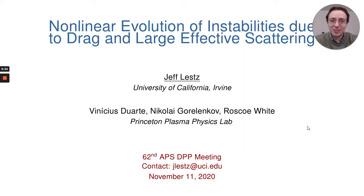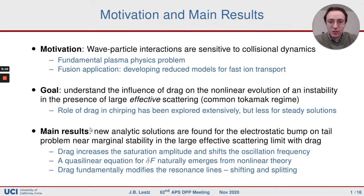Hi, I'm Jeff Letts. I'm a postdoc at UC Irvine, and this is some work that I did with collaborators at Princeton. In particular, Vinicius was very involved in this work. The goal was to understand how drag influences the nonlinear evolution of an instability when you have large effective scattering, which is a common tokamak regime.